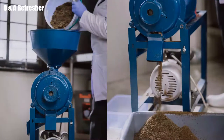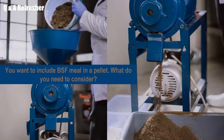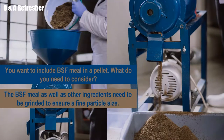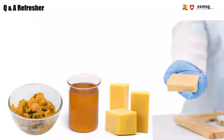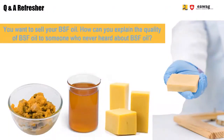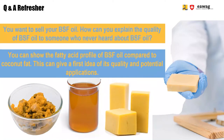Let's end with two quick review questions. Question 1: You want to include BSF Meal in a pellet — what do you need to consider? Answer: BSF Meal and all other ingredients need to be ground to ensure a very fine particle size. Question 2: You want to sell your BSF Oil — how can you explain its quality to someone unfamiliar with it? Answer: Show them the fatty acid profile of BSF Oil and compare it to a known oil like coconut fat, which gives a first idea of its quality and potential applications.